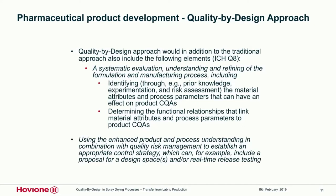What we do additionally is a systematic evaluation, understanding, and refining of the formulation and the manufacturing process — identifying which material attributes and process parameters have an effect on the product's critical quality attributes, and determining the relationship between those attributes and CQAs. Using enhanced product and process understanding combined with risk management, we establish the manufacturing process and an appropriate control strategy, which can include the design space and real-time release testing. Real-time release testing is the ultimate goal, but it does require quite a lot of work to achieve.